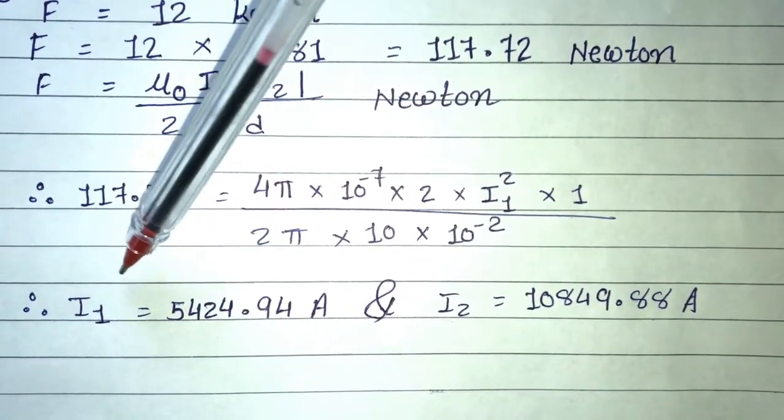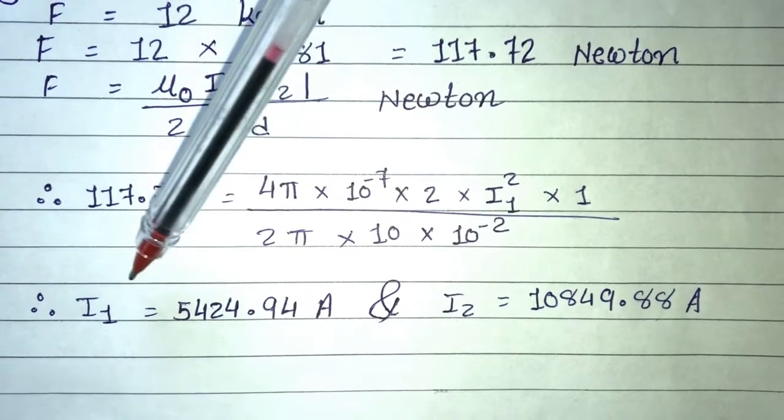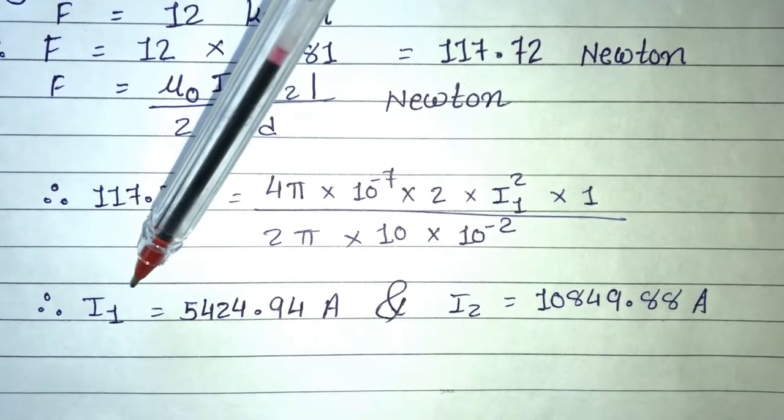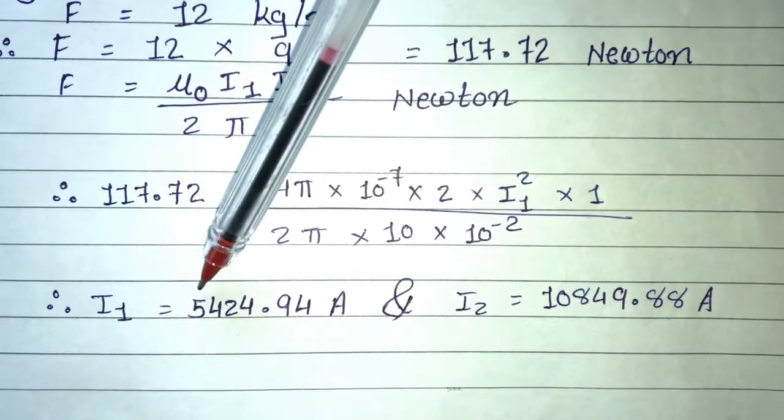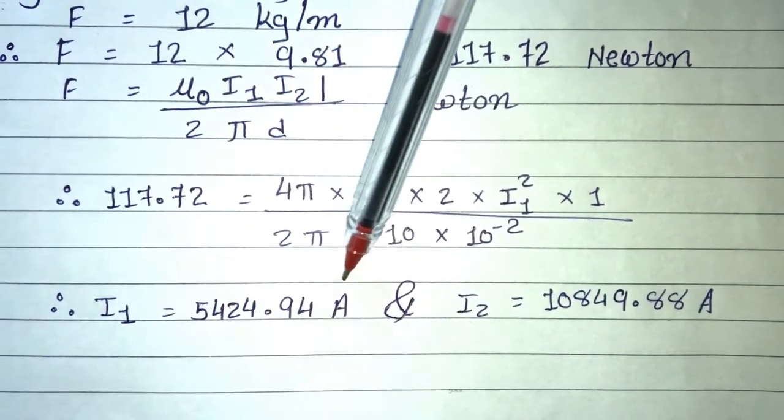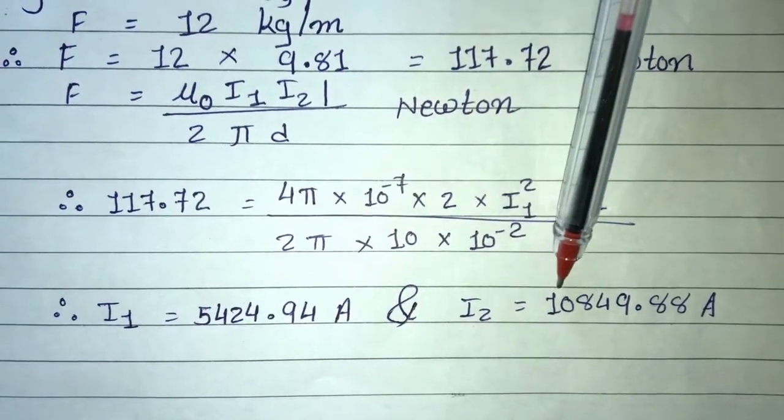So this friends is your first current value I1, meaning the first conductor's current value, and this is your second conductor's current value. So, I1 is equal to 5424.94 ampere and I2 is equal to 10849.88 ampere.